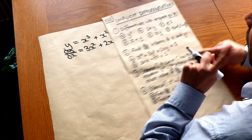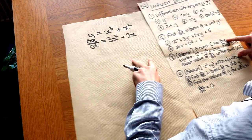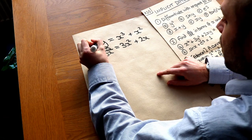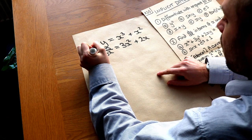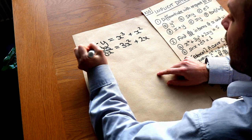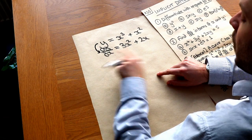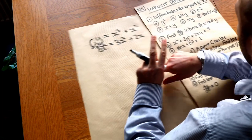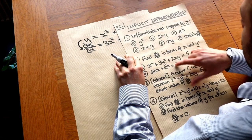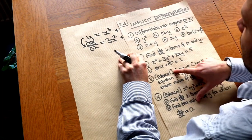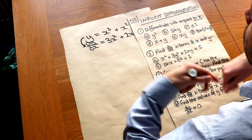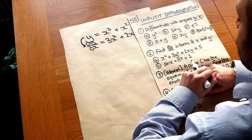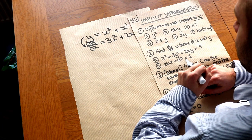There's basically only one thing that you need to remember, and that's when we differentiate y with respect to x we get dy over dx. That's pretty much all you need to know for this particular topic, along with being confident with using the chain rule.